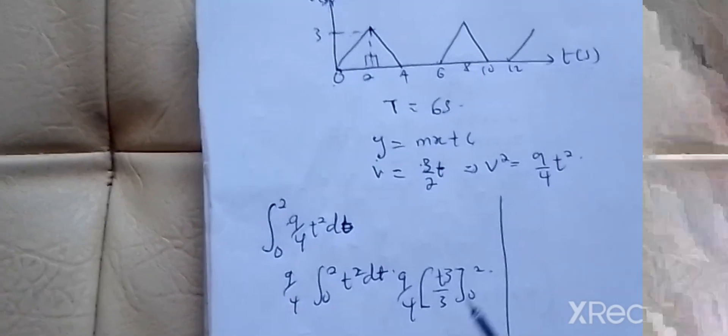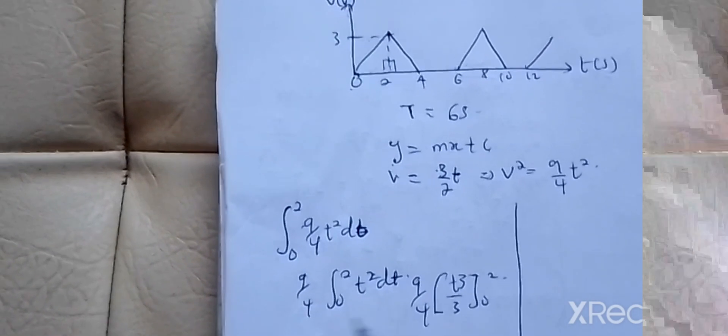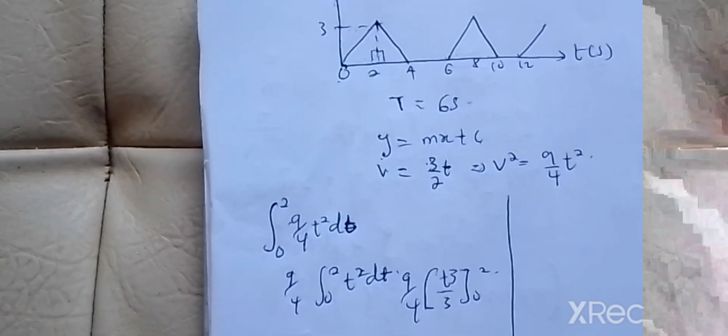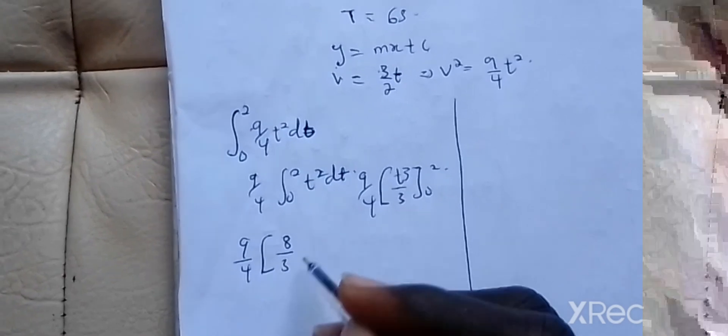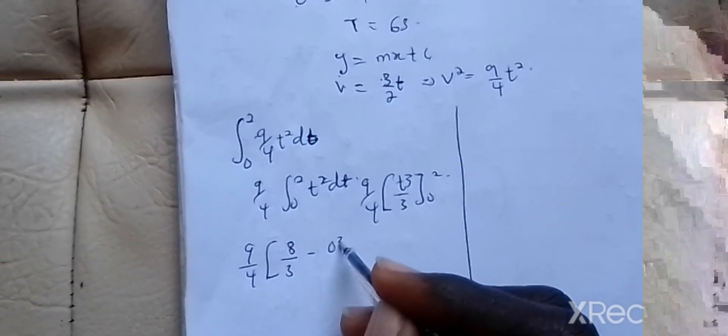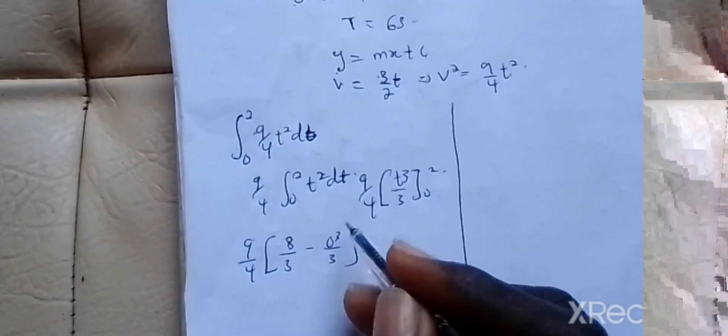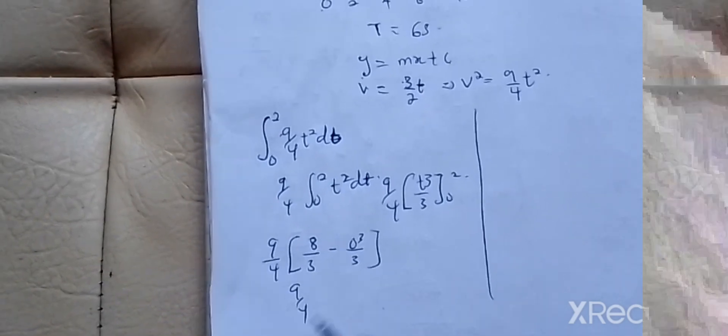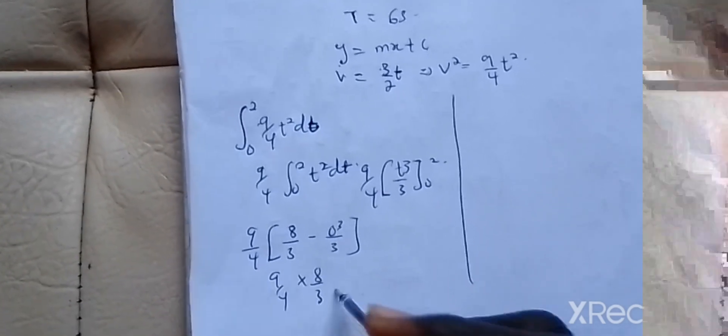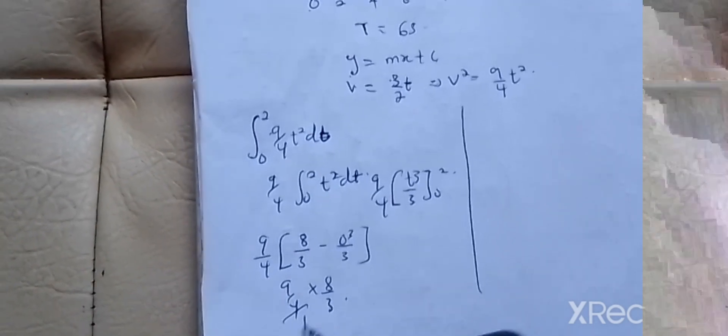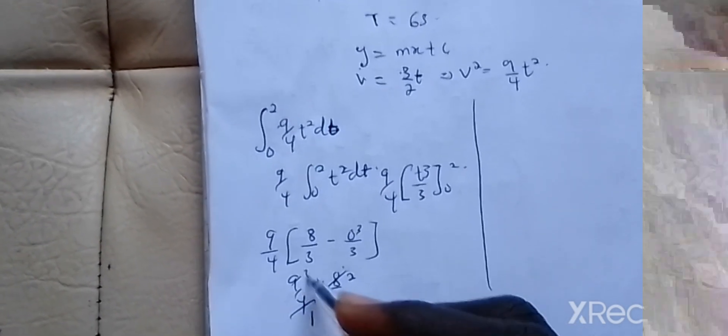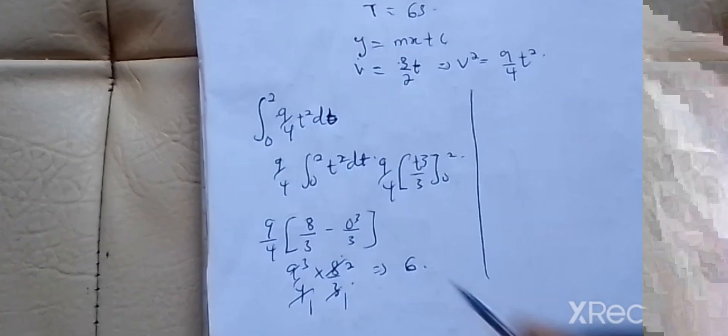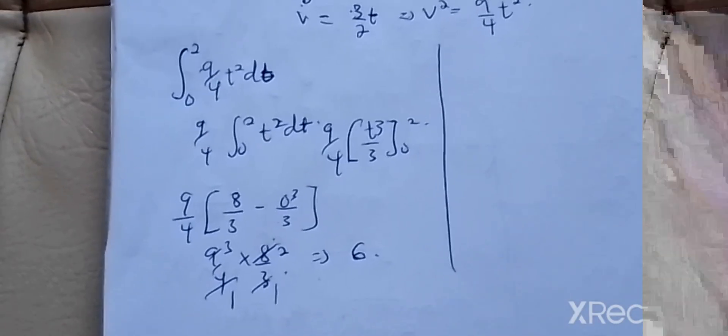From here we just make our substitution. When you put 2 inside, you get 9 over 4 times 2 cubed, that's 8 over 3, minus 0 cubed over 3. This simplifies to 6, so 6 will be the area under the squared right angle triangle.